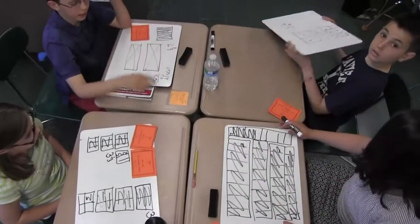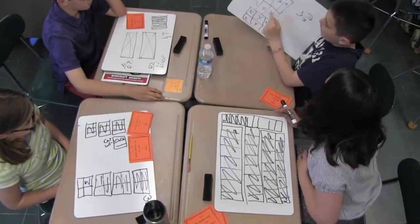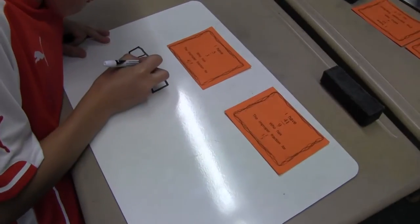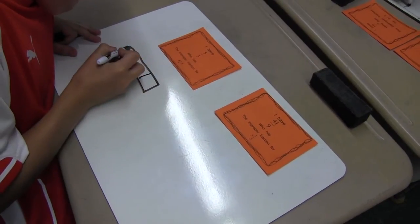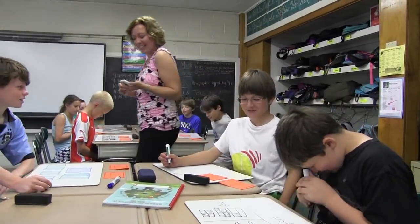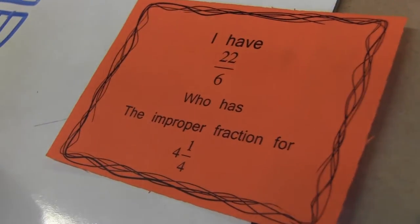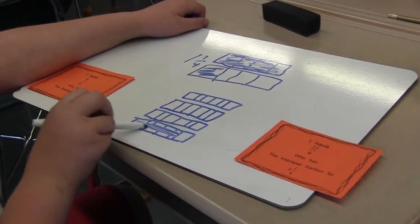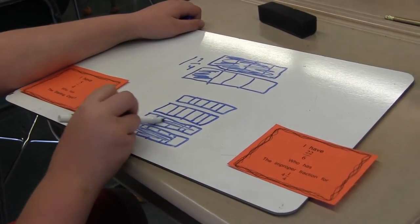Today's activity was called 'I Have Who Has' and it was a review of improper fractions and mixed numbers and how to convert between the two. We did this activity to review what we've learned previously, but also because in order for students to do all of the fifth grade fraction skills — add, subtract, multiply, and divide — they need to be able to turn mixed numbers into improper fractions and vice versa.